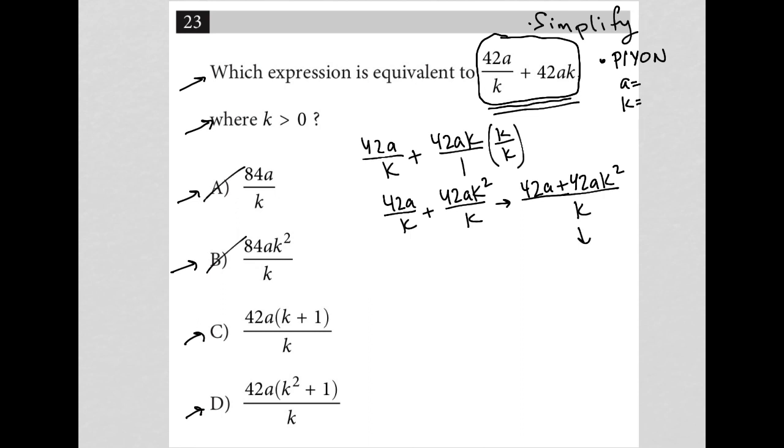What is the greatest common factor between 42a and 42ak squared? Well, that greatest common factor would be 42a. Now, what do I have to multiply 42a by in order to recapture this first term? Well, that would be 1. I have a plus sign here, so plus. And what would I need to multiply 42a by to capture this second term, 42ak squared? Well, that would just be k squared. So that's how you do that. This is all over k.